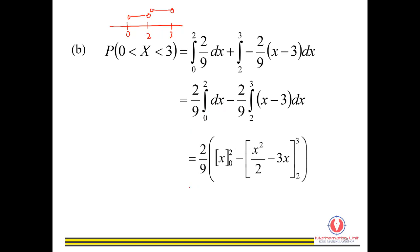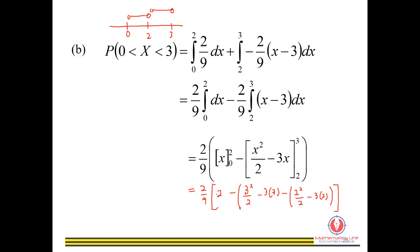We substitute the values — substituting x equals 2 and x equals 0 into each integral — and calculate. The result gives us a probability of 5 over 9.